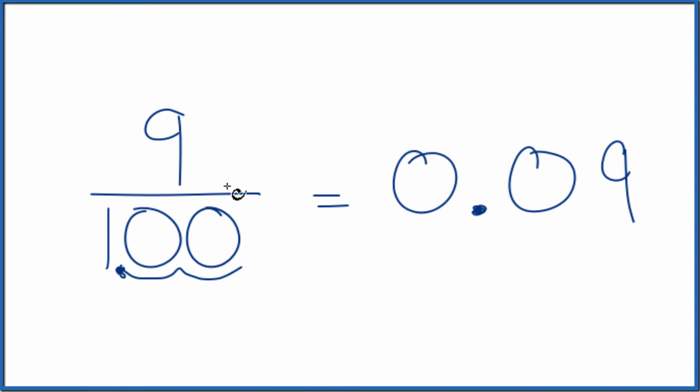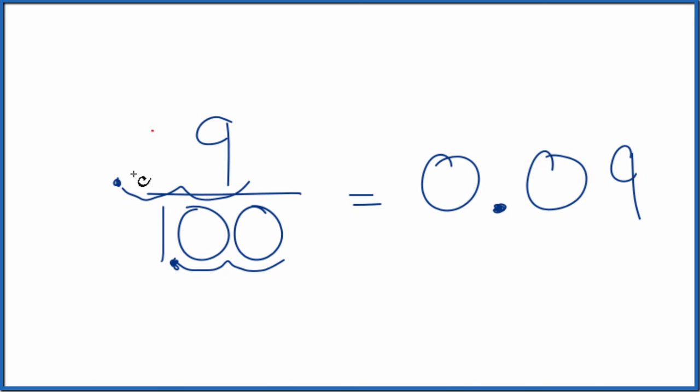But the top, we've got to do the same. So we go 1, 2. There's our decimal place. We'll put a 0 here. Let's put a 0 in front.